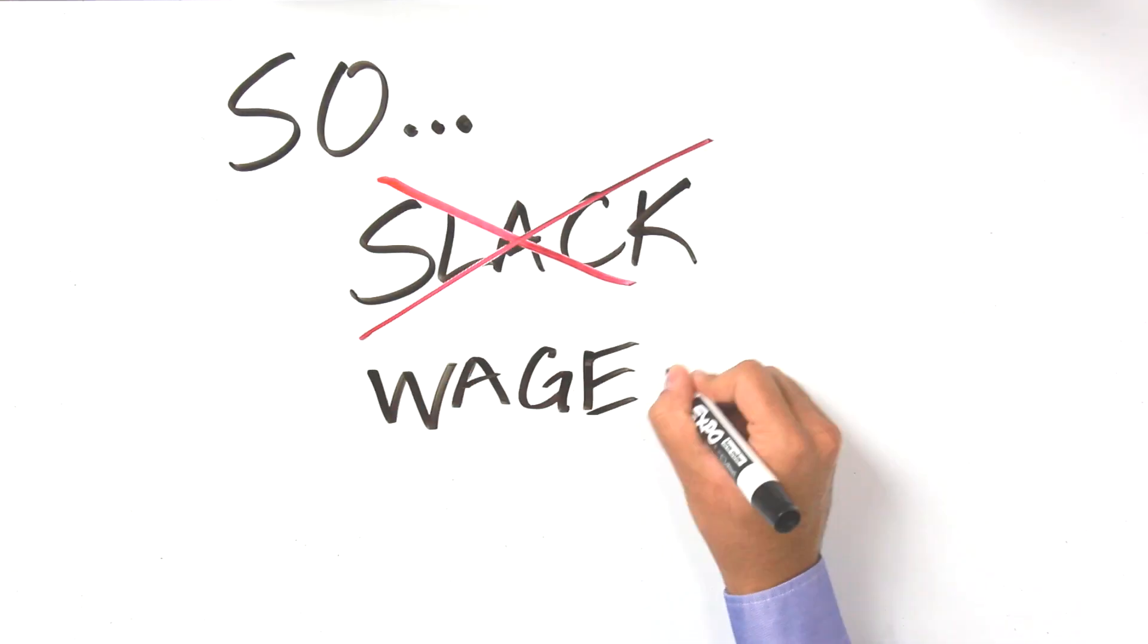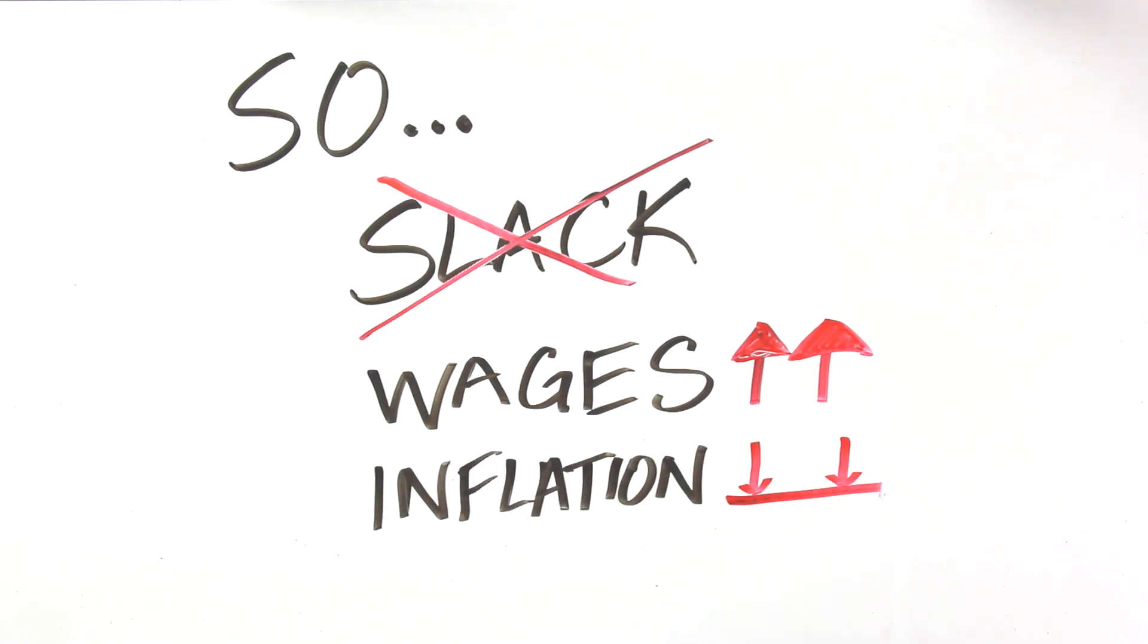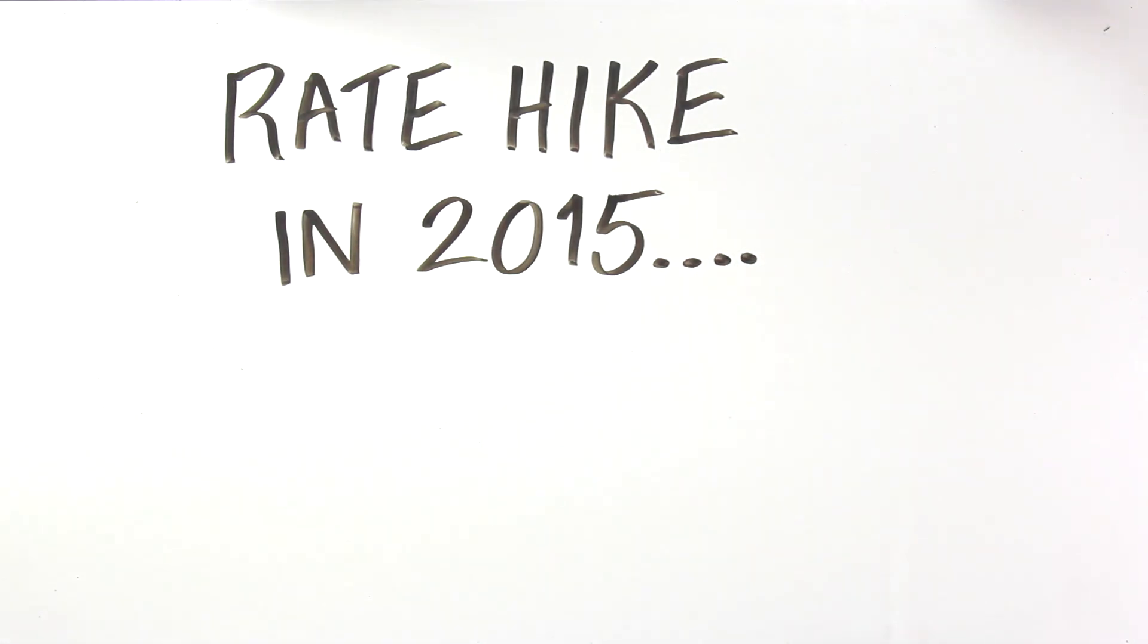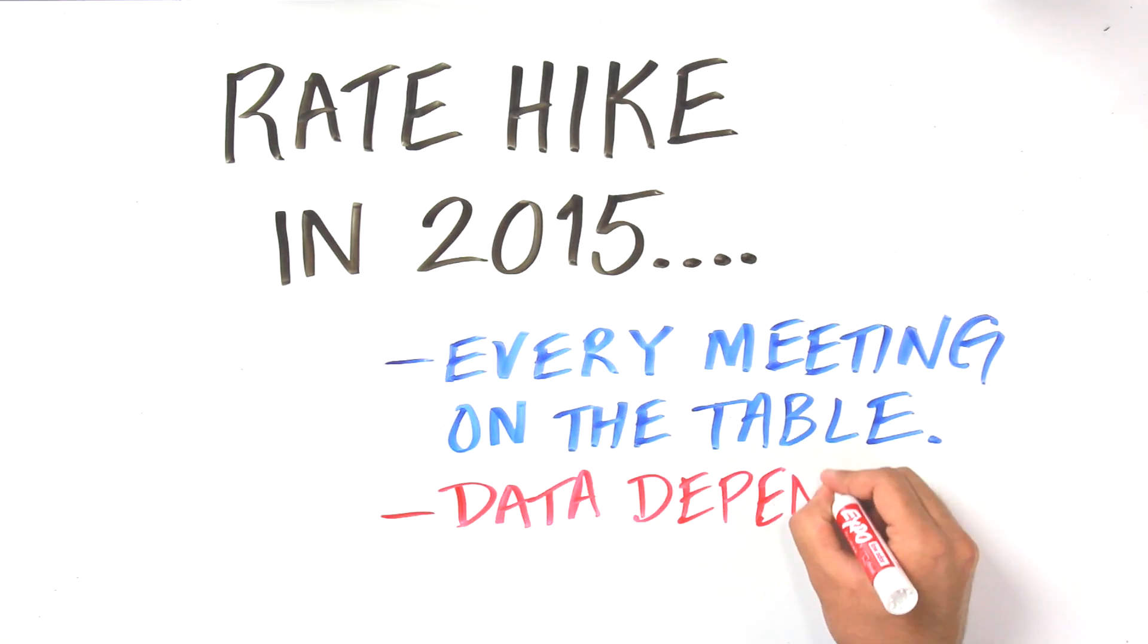So, slack is diminishing, wages are rising, and inflation is low but stable. That means a rate hike in 2015 is likely, with every meeting on the table, for a data-dependent Federal Reserve.